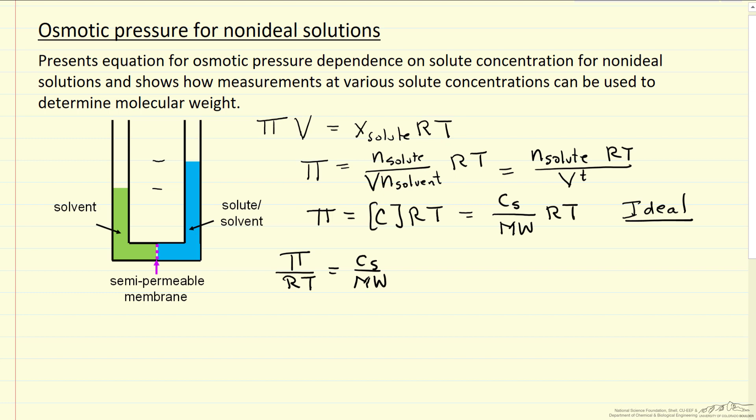And then we'll essentially correct by using, and let me write just a couple of terms, so we could in theory have a number of terms here. So this would be CS squared, and you can of course continue this.